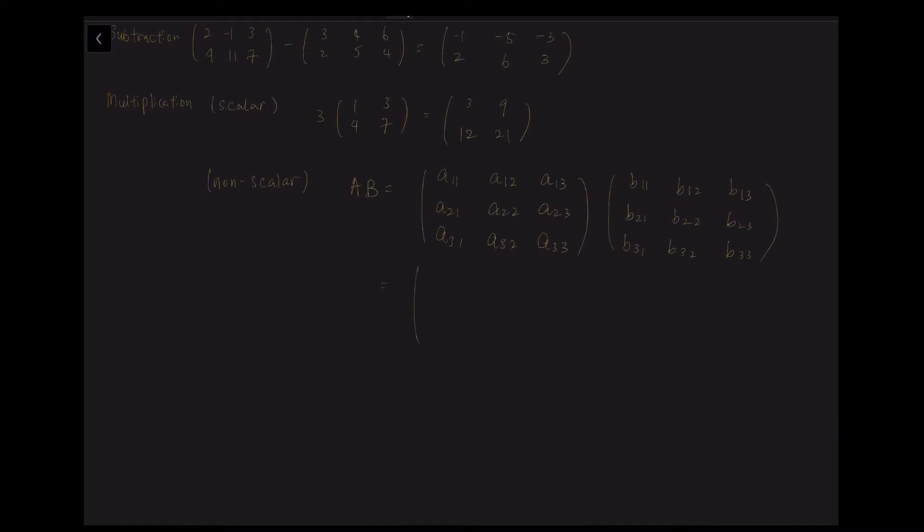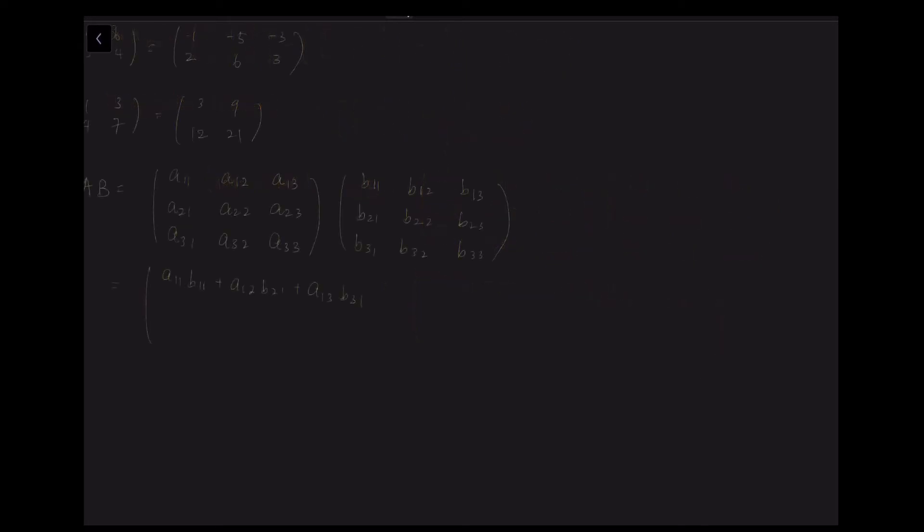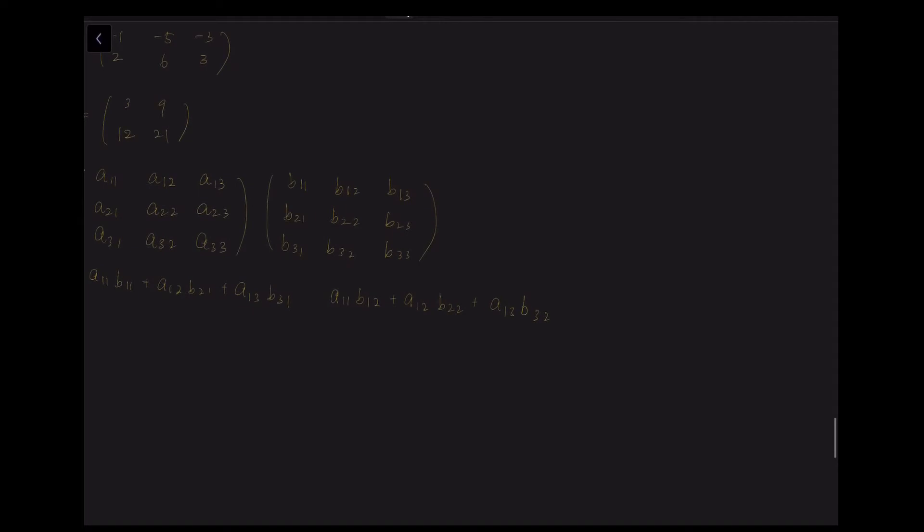Let's take an example. So we have A11 times B11 plus A12 times B21 plus A13 times B31. That's the first row and the first column. And for the second component, we'll do the same thing. So it's A11 times B12 plus A12 times B22 plus A13 times B32. Then finally the last column: A11 times B13 plus A12 times B23 plus A13 times B33. Then we have the first row of the first matrix done.